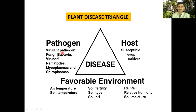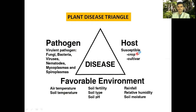For the development of any kind of disease, three things are required. First, the pathogen — fungi, bacteria, viruses, or mycoplasma — should be a virulent one with the ability to cause disease. Second, the host should be susceptible, meaning it should be disease-prone. Third, the environment should be favorable, including proper temperature, soil fertility, pH, and rainfall.